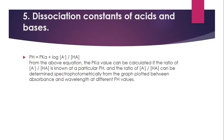The next application is determining the dissociation constants of acids and bases. Using the equation pH = pKa + log([A⁻]/[HA]), the pKa value can be calculated if the ratio of A⁻ to HA is known at a particular pH. The pH and the ratio of A⁻ to HA can be determined spectrometrically from a graph plotted between absorbance and wavelength at different pH values.